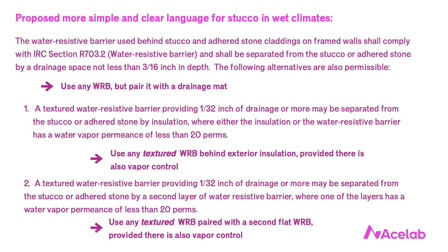A more sensible exception to the drainage mat requirement would be to permit less thick and less expensive textured water control membranes that provide a smaller space as the second layer, when we provide vapor control — and that vapor control can come from the textured membrane or from the WRB, either one, as long as one of them has a water vapor permeance of less than 20 perms. In other words, a drainage reduction credit is permitted when designers provide a measure of vapor control, not enhanced water holdout. Here's my proposed alternative code language — you can pause the video and screenshot it if you like.